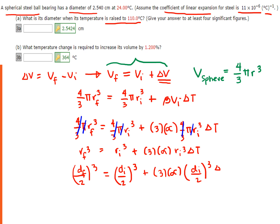Our change in temperature is 110 minus 24 degrees Celsius — that's temperature final minus temperature initial. Looking at this equation, the factor of 2 is common to all terms and can be cancelled out, leading to an even simpler equation: D_f cubed equals D_i cubed plus 3 times the coefficient of linear expansion times D_i cubed multiplied by the change in temperature.